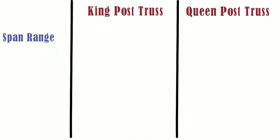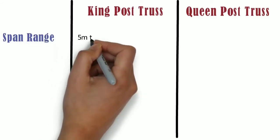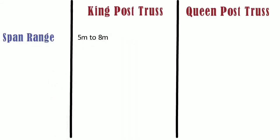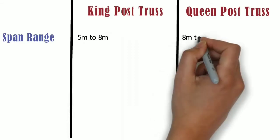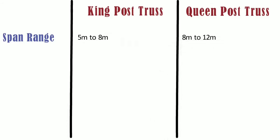Span range. King post truss is used when the length of span is in the range of 5 to 8 meters. It provides extra reliability for wider roof designs.